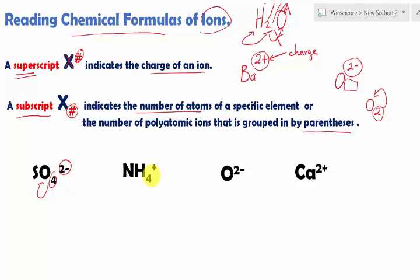And then if we look over here, we look at ammonium right here, NH4 plus. That four tells you there are four hydrogen atoms. But the overall charge of this whole entire polyatomic ion is just one plus.